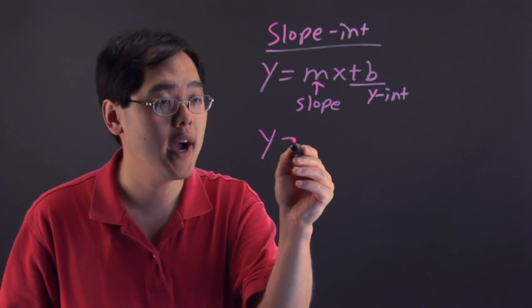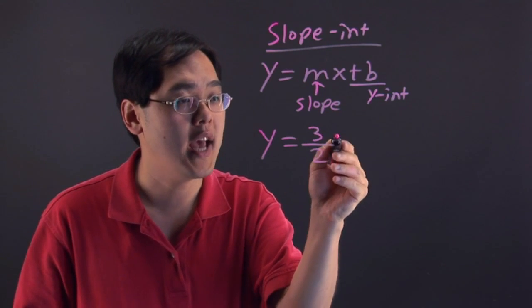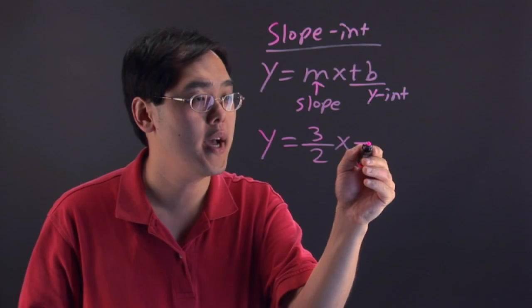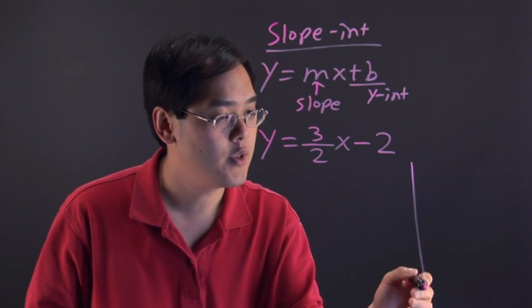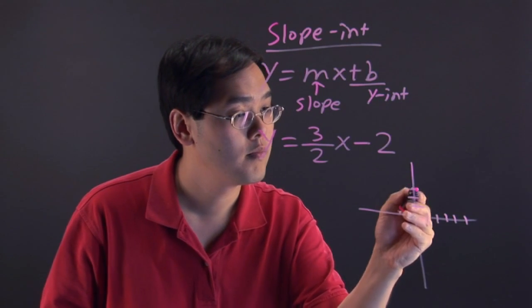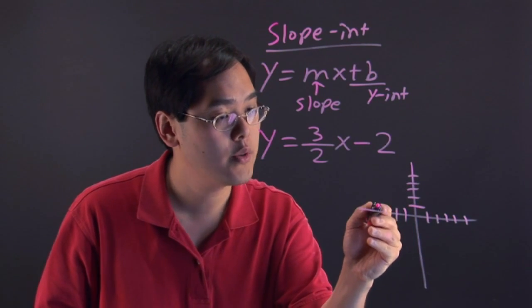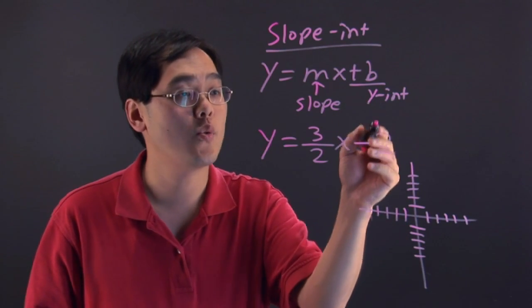Suppose you have y equals 3 halves x minus 2. If you were to graph using the xy coordinates, what you'll see here is, like I mentioned before, you graph using the y-intercept first.